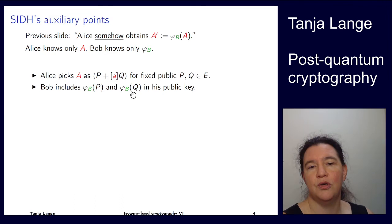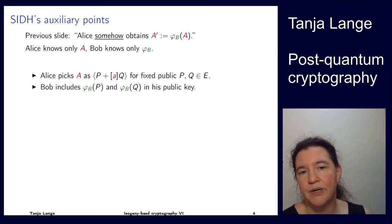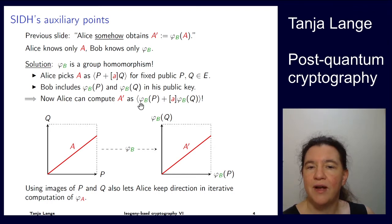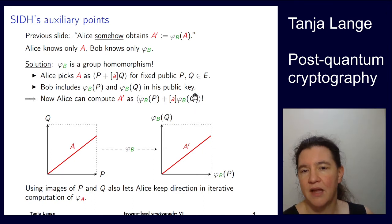And then Bob can include this in his public key. So P and Q are public. These are the bases. And Bob includes these images, they're called auxiliary points, in his public key. So he shows how his secret isogeny operates on these points. And given those points, then Alice can actually compute her A prime. The group is generated by a point, so we just need to know what is the image of this point. And isogenies are homomorphisms. So if we know phi_B of P and phi_B of Q, then this is phi of Alice's capital A.